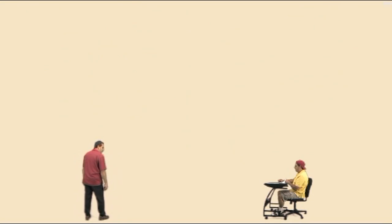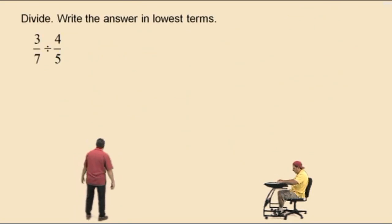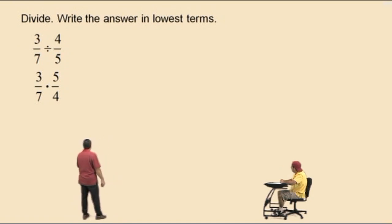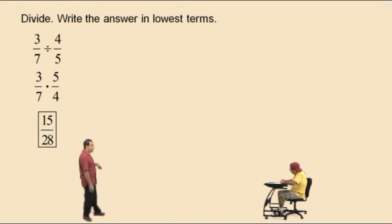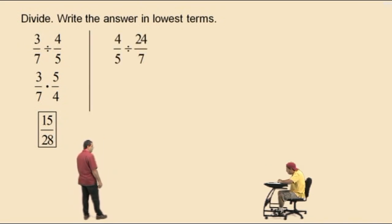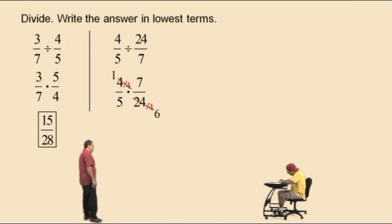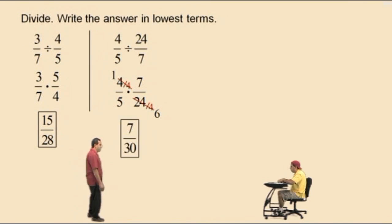Now we're going to divide. Always write the answers in lowest terms. 3 sevenths divided by 4 fifths — we multiply by the reciprocal, which is 5 fourths. Multiplying straight across: 15 on top and 28 on the bottom. 15 over 28 — those two numbers do not have a common factor, so it is already reduced. Now, 4 fifths divided by 24 sevenths — multiply by the reciprocal, 7 over 24. Common factor of 4 and 24 is 4. 4 divided by 4 is 1, 24 divided by 4 is 6. We get 7 over 30.